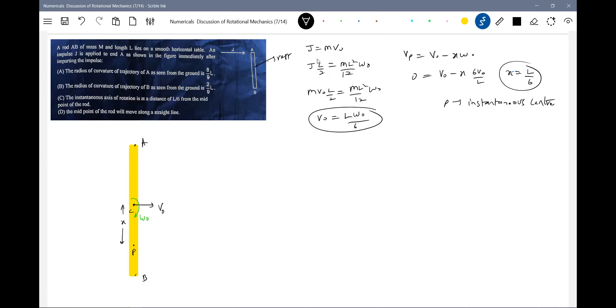Now the radius of curvature of point A as seen from the ground is 8/9 by l. Of point A, okay, that is asking only point A.